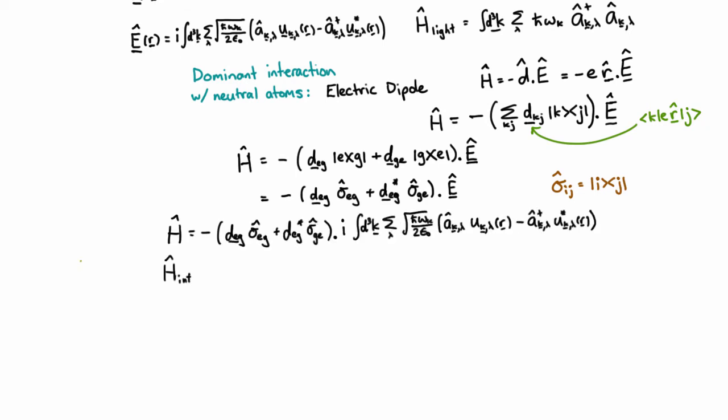We do this in the interaction picture. And if we absorb the energy of the atoms and the energy of the photons, which is just this energy here, and if we absorb those into the operators, as we do in the interaction picture, then our resulting interaction Hamiltonian is going to be...